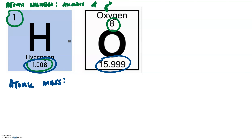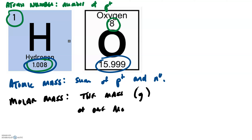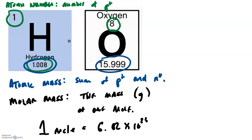The atomic mass is the sum of the protons and neutrons. We also use the name molar mass, which is the mass in grams of one mole of a particular element. One mole of anything is 6.02 times 10 to the 23rd of that thing. So if you had 16 grams of oxygen, you have a mole's worth — 6.02 times 10 to the 23rd atoms of oxygen.